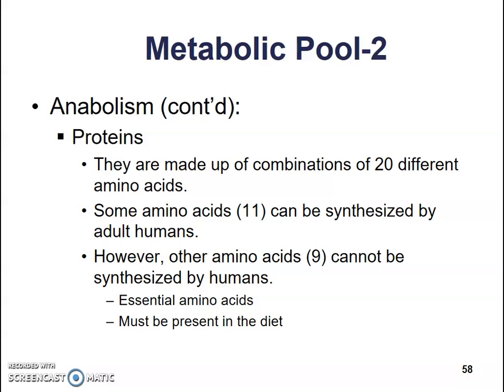Anabolism continued — proteins. They're made up of a combination of 20 different amino acids. Some amino acids can be synthesized by adults; however, the others have to be eaten. Our bodies can make 11 of the 20; the other 9 have to be consumed. Plant-based foods often don't have all 20 amino acids in a single form, so if you are vegan, you need to ensure your diet contains varied protein sources to get all 20 necessary amino acids. Otherwise, you'll start to get sick because you're not getting all the nutrients you need.